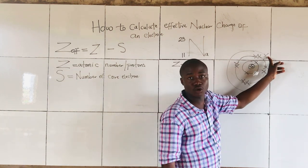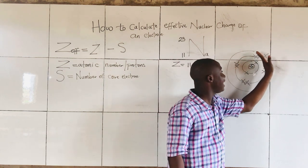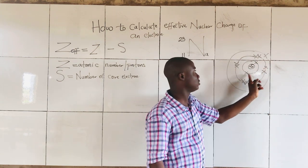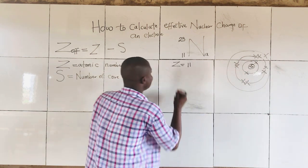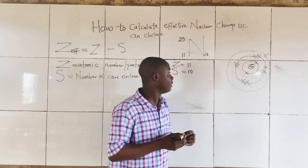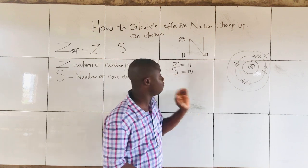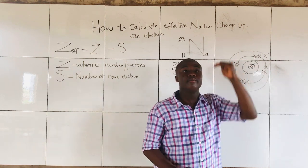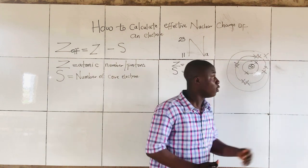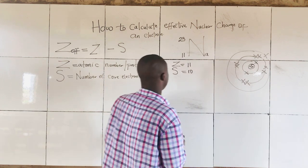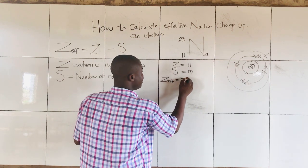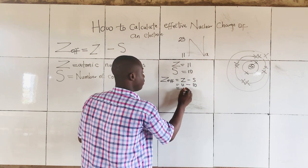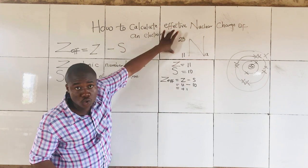The valence electron for sodium is just 1. The electrons below that last shell are 8 plus 2, which gives us 10. So the value for S, the number of core electrons, is 10. Therefore, to get the effective nuclear charge of sodium: Z_eff = Z minus S = 11 minus 10 = plus 1. The effective nuclear charge of sodium is +1.